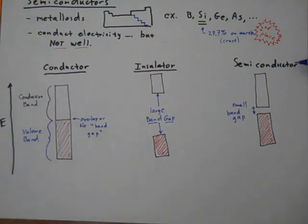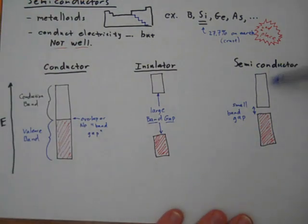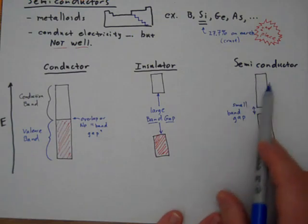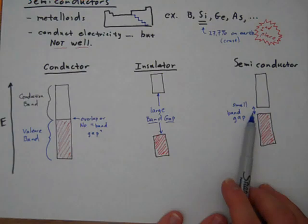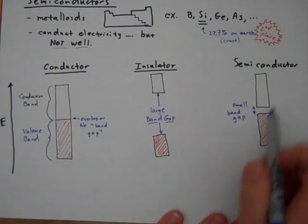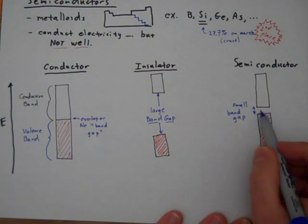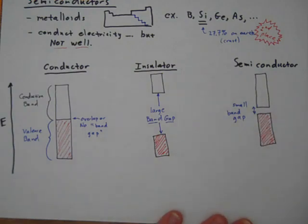A semiconductor has properties in between, like metalloids. They tend to have physical properties more like metals, but chemical properties more like nonmetals. So a semiconductor is in between. So in this case, we still have a filled valence band, and there's still a conduction band. But what's different in semiconductors is the band gap is relatively small. So with a certain amount of energy, you can cause these electrons to be promoted, and they will start to conduct electricity.